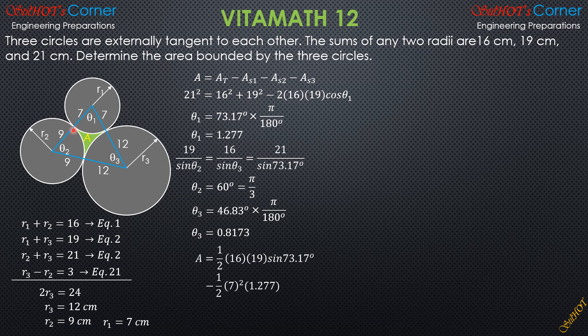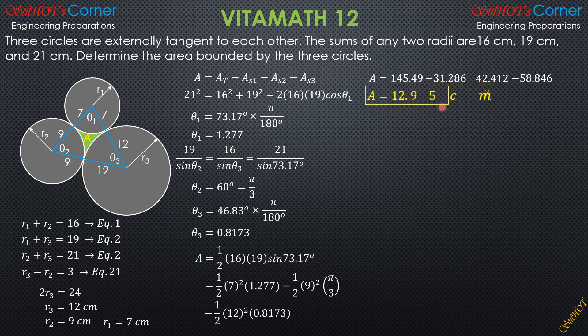Then minus this sector here, which is one half 12 squared times theta 3, which is 0.8173. We can now solve for that area required. The first term is one half of 16 times 19 times sine theta 1, the second is minus 31.286, then minus 42.412, then minus 58.846. The area therefore is equal to 12.95 square centimeters.